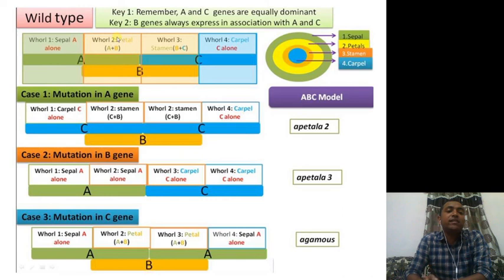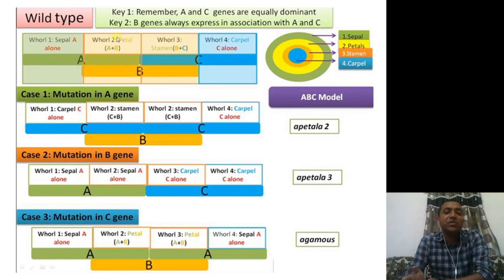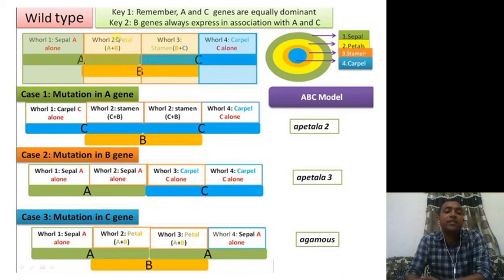Now let us see mutation in gene B. Whorl one is not affected. In whorl two, because of mutation in gene B, you now get only gene A expressed, giving a sepal. In whorl three, B plus C becomes just C — since A and C are equally dominant — giving a carpel. Whorl four, only C with no mutation, also gives a carpel. So whorls one and two are sepals, whorls three and four are carpels. This condition is known as Apetala 3.